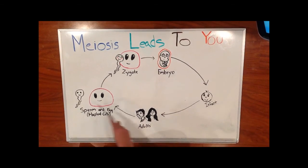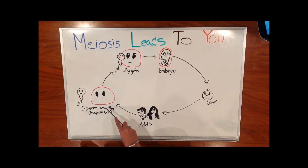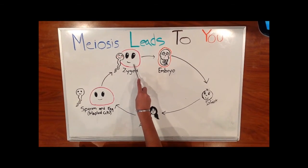Life starts with the father creating the sperm and the mother creating the egg. These are the haploid cells. When they interact, the sperm fertilizes the egg, which creates the zygote.